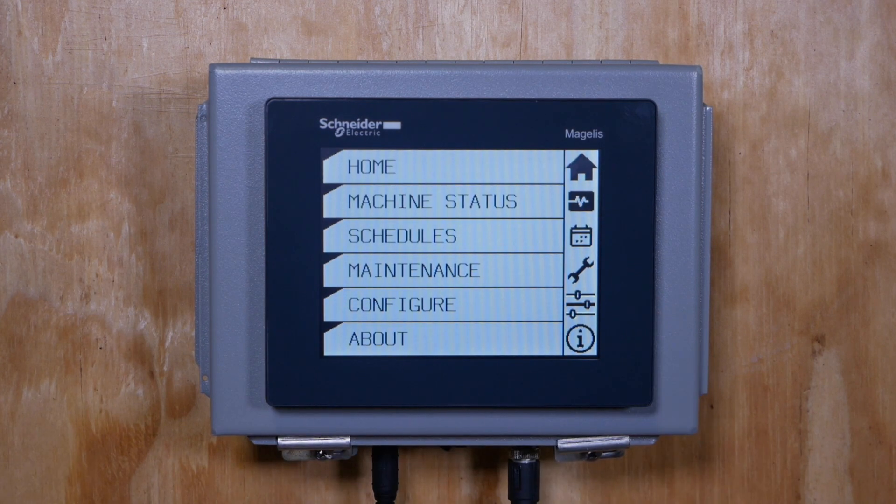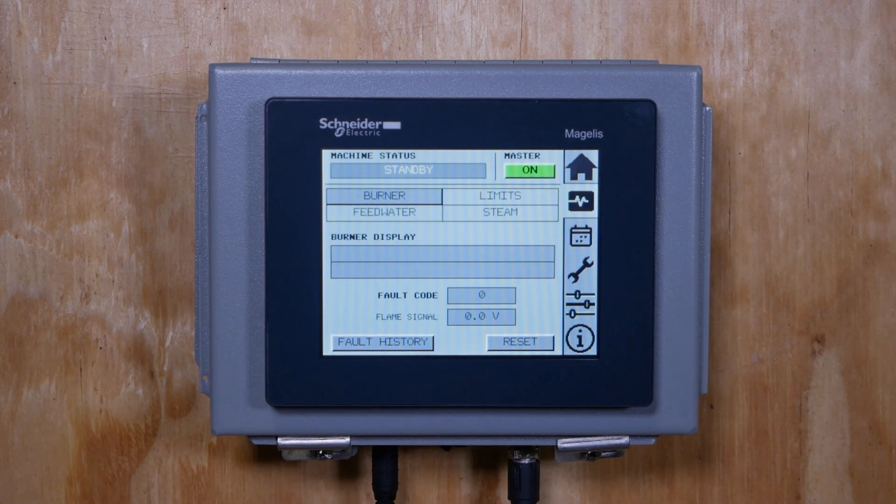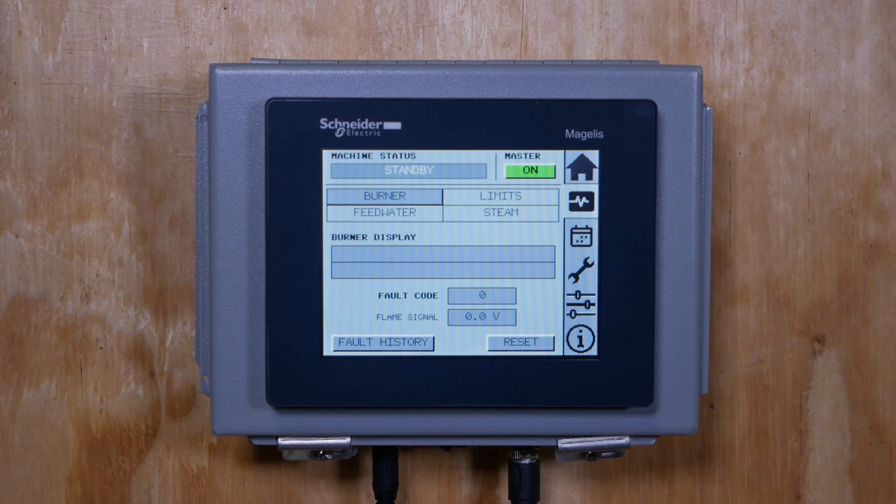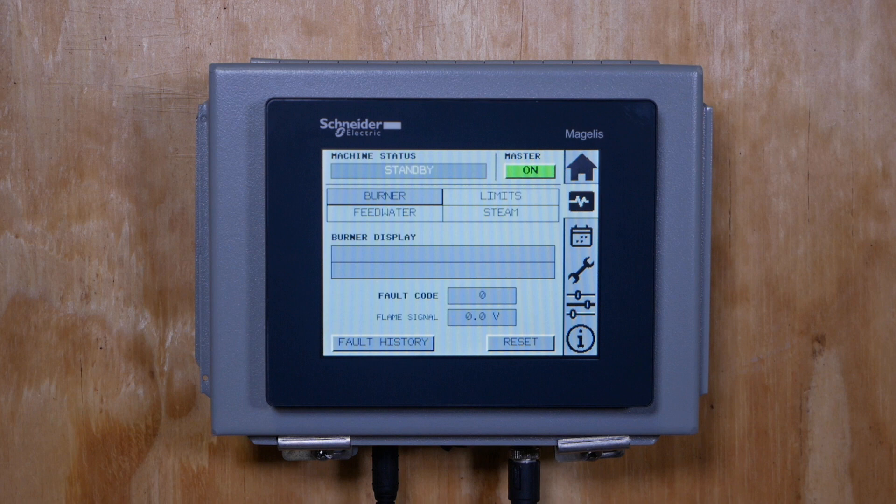Next, the machine status menu shows diagnostic information as mentioned earlier. With the burner page highlighted, current burner status is displayed. You can check fault history or reset the burner from this page.